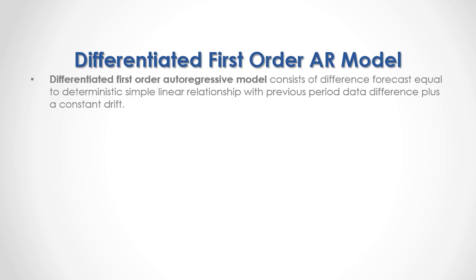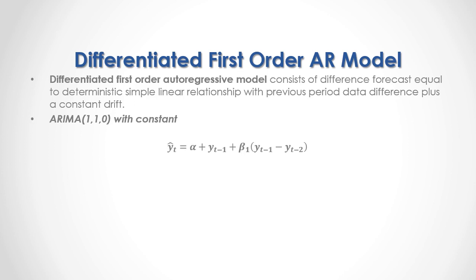An example of ARMA models is the Differentiated First Order Autoregressive Model, which consists of a Difference Forecast equal to a deterministic simple linear relationship with previous period data difference plus a constant drift. Its ARMA notation has one autoregressive order, one order of differentiation or integration, and zero moving average order. As a formula, current period forecast is equal to a constant drift plus previous period's data plus an autoregressive coefficient multiplied by the difference between previous period's minus second previous period's data.